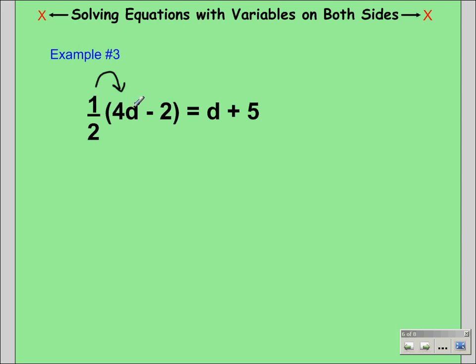If we distribute the 1 half to the 4d, we're going to get 4d over 2. If we distribute the 1 half to the negative 2, we're going to get minus 1.